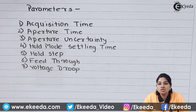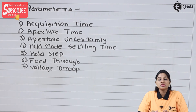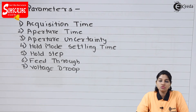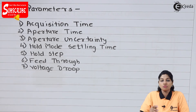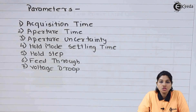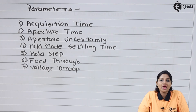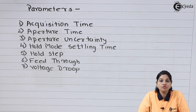The next parameter is feed through. Due to the stray capacitance of the switch, some amount of AC coupling takes place between input and output. Because of this AC coupling, the output voltage varies slightly, and that change in the output voltage is called feed through.